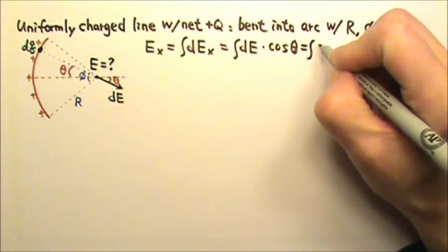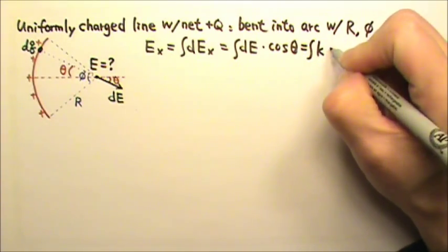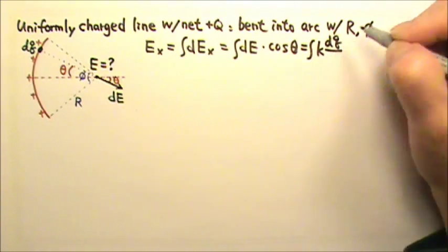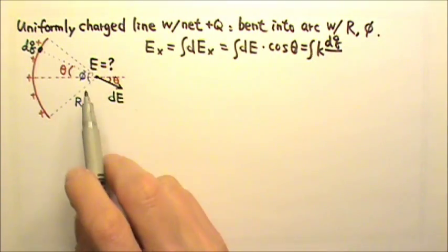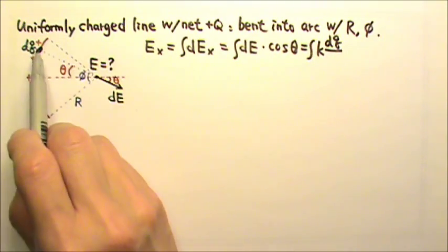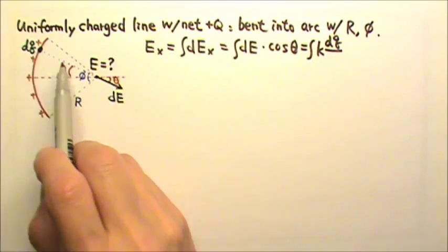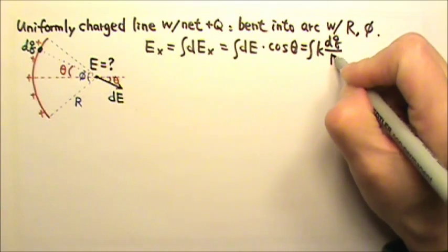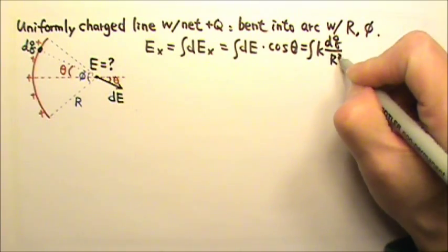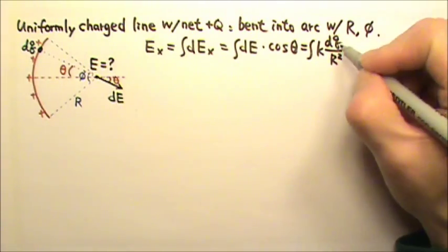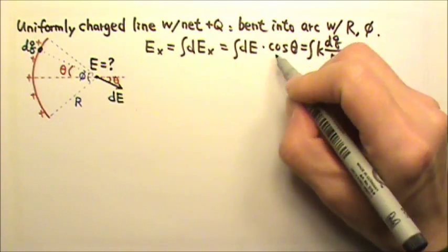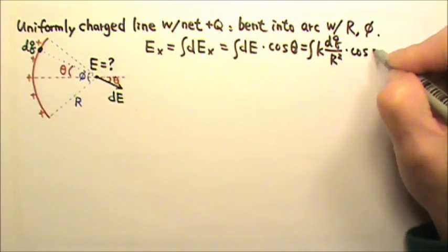So dE equals k times the point charge dq over r squared. What is the distance between the point charge and the location we're interested in? It is the big R. So this is k·dq over R squared. And we have to multiply that by cosine theta.